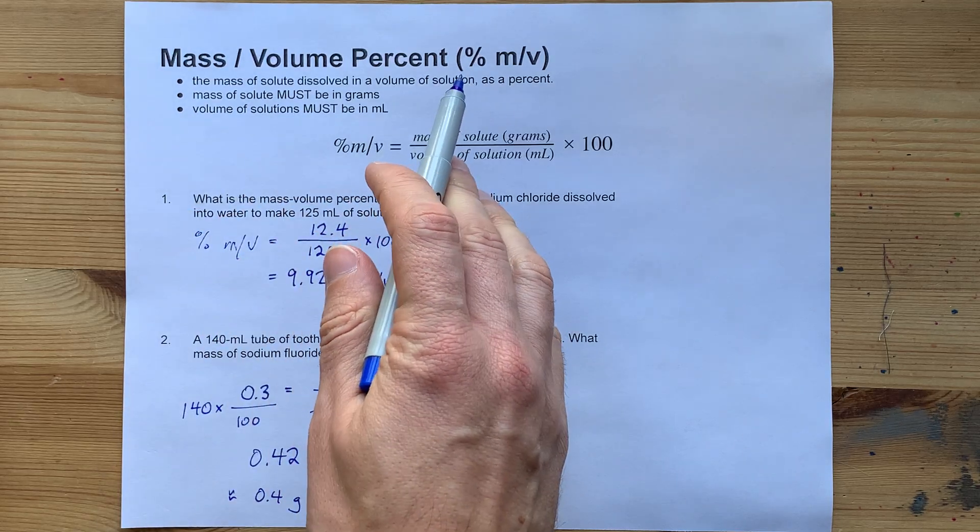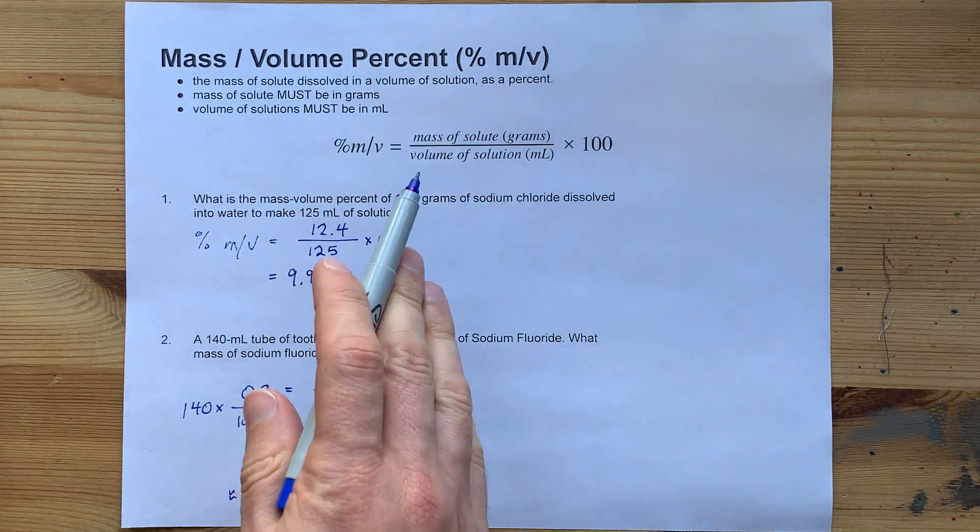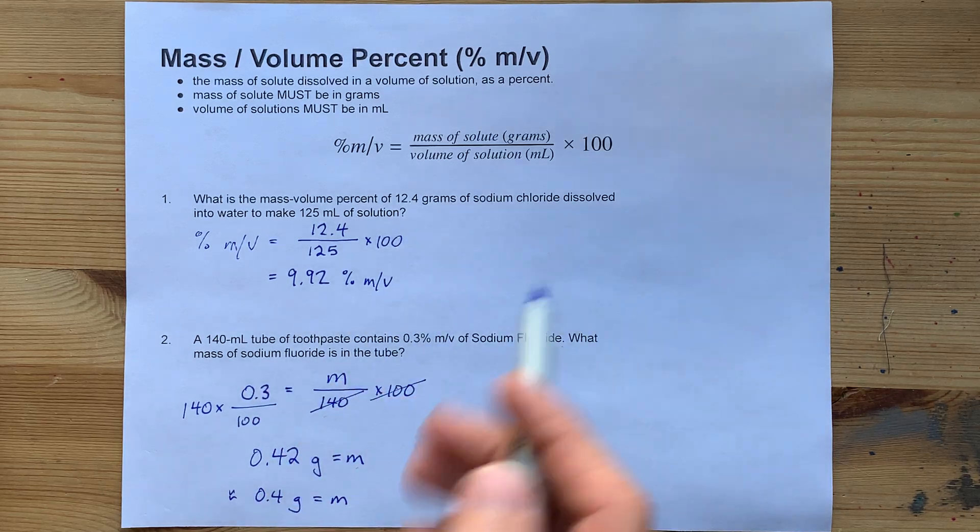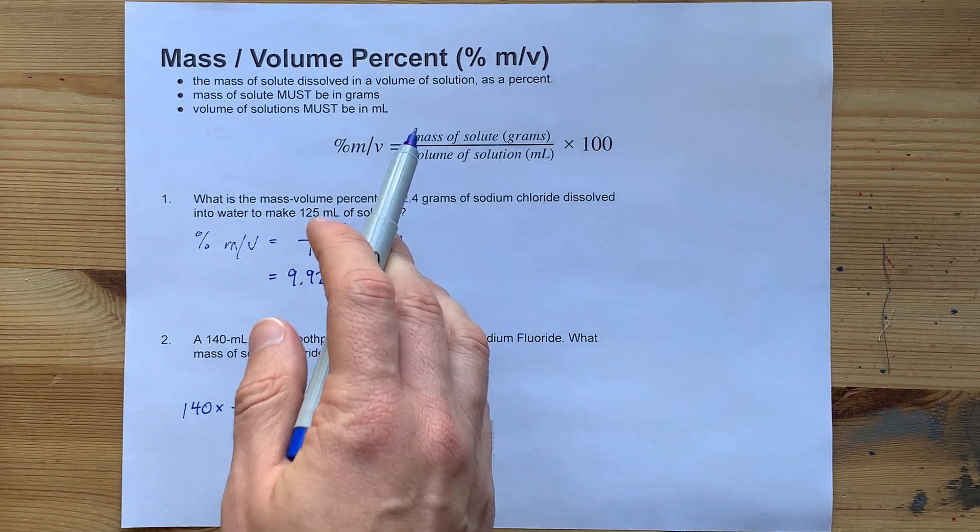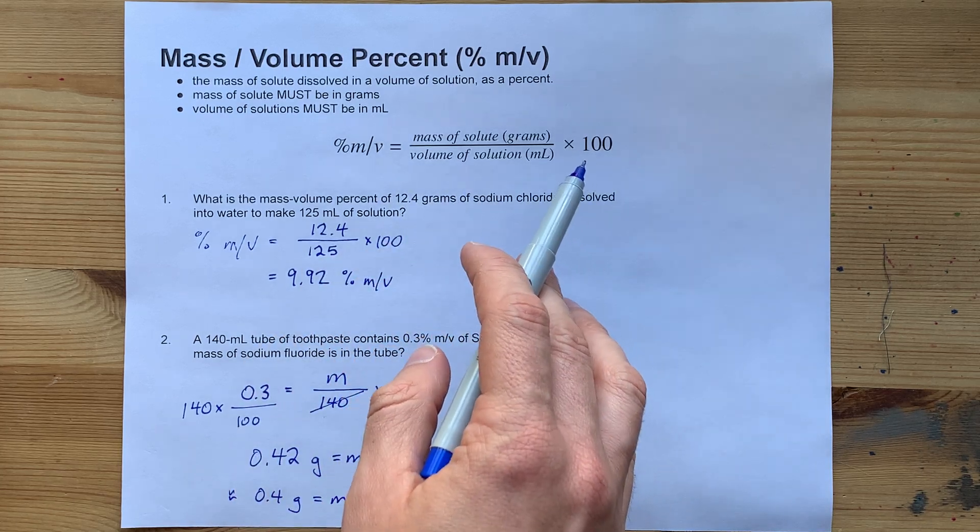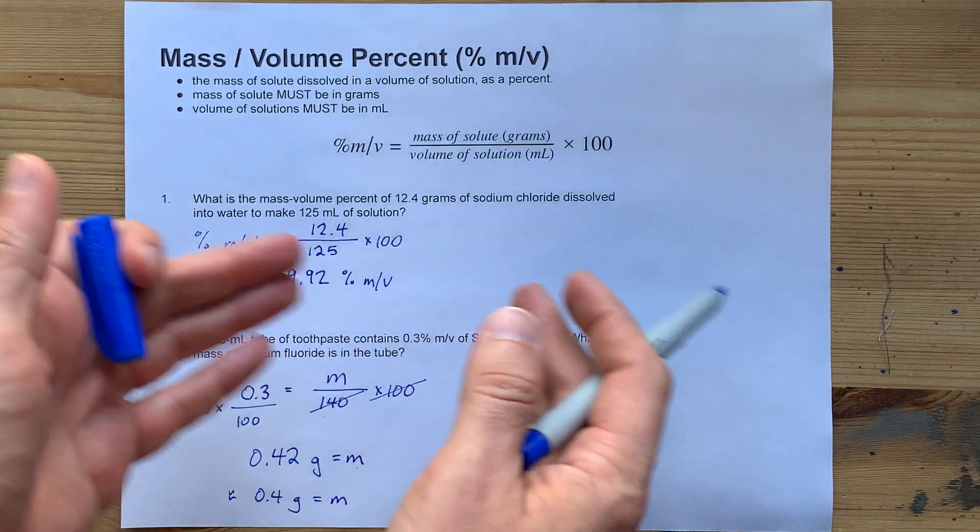Anyways, mass-volume percent as a number is generally how many grams there are per 100 milliliters of solution. Your mass has to be in grams, your volume has to be in milliliters, and you times it by 100 to get percent. Beautiful.